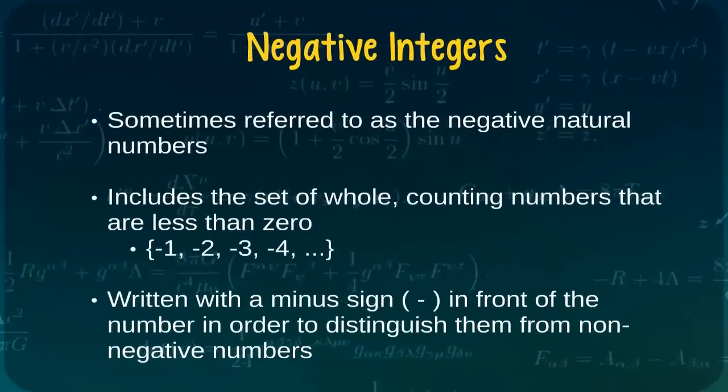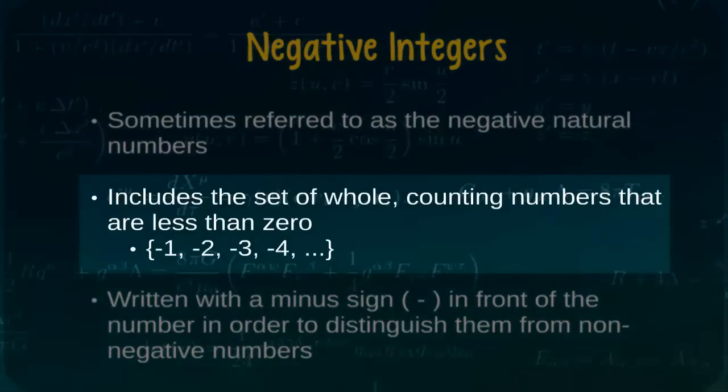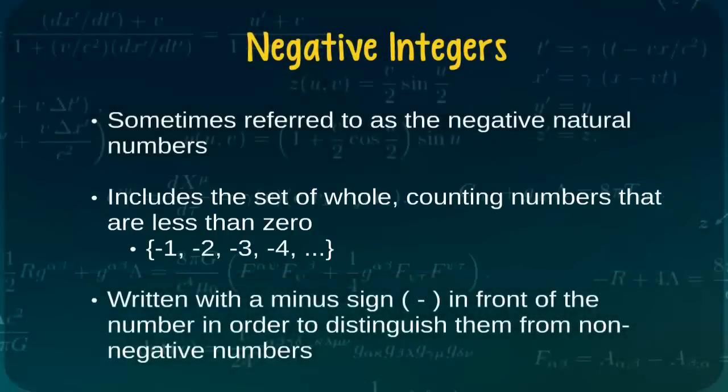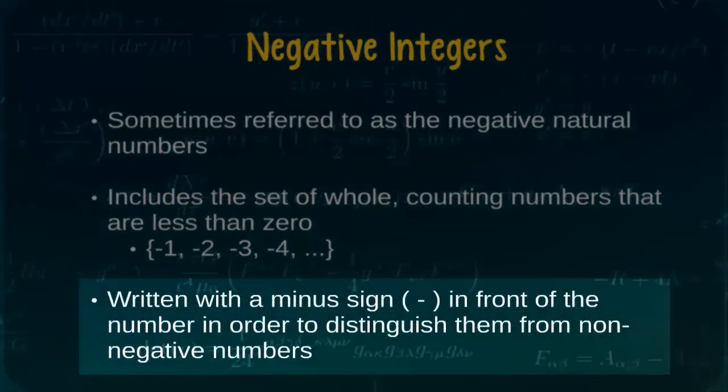Next, we will consider the negative integers. Negative integers are sometimes referred to as the negative natural numbers and include the set of whole counting numbers that are less than zero, such as minus 1, minus 2, minus 3, minus 4, and so forth. As with all negative numbers, negative integers are conventionally written with a minus sign in front of the number in order to distinguish them from non-negative numbers.